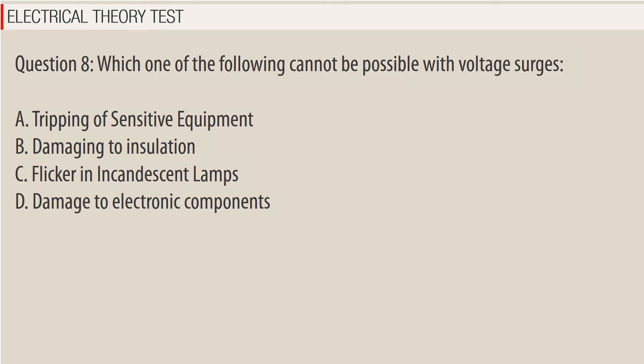Question 8: Which one of the following cannot be possible with voltage surges? A. Tripping of sensitive equipment. B. Damaging to insulation. C. Flicker in incandescent lamps. D. Damage to electronic components.